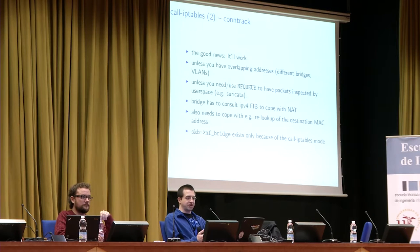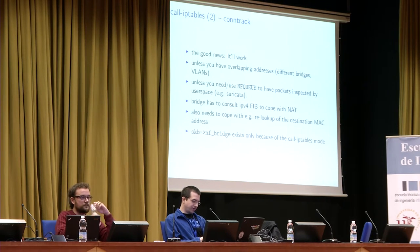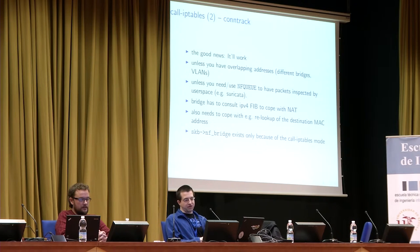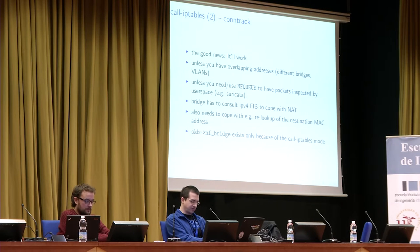We also have very ugly code for doing network address translation in the bridge. For instance, if the bridge-netfilter code detects that the IP address has changed, it has to do a lookup of the neighbor cache to query for a new destination MAC address. So we have all these layering violations of invoking routing code from the bridge. Furthermore, the SKB data structure has an extra pointer to store various extra information such as the bridge input port, bridge output port, and some scratch space to store original headers — all of which is only used because of this call IP tables mode and could be removed if we could do without it.